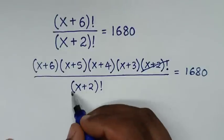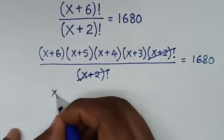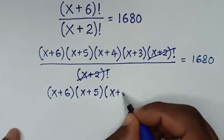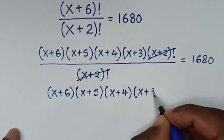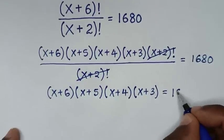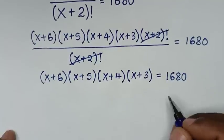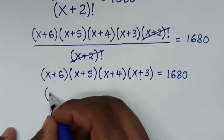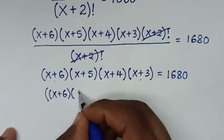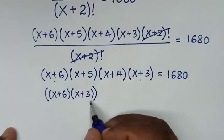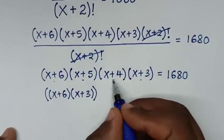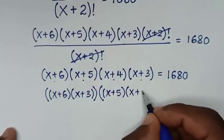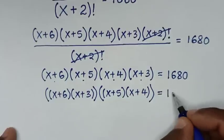Then to simplify, the (x+2)! in the numerator cancels with the (x+2)! in the denominator. So we get (x+6)(x+5)(x+4)(x+3) is equal to 1680. In the next step, we group the pairs: (x+6)(x+3) and (x+5)(x+4), and we will multiply each pair together.